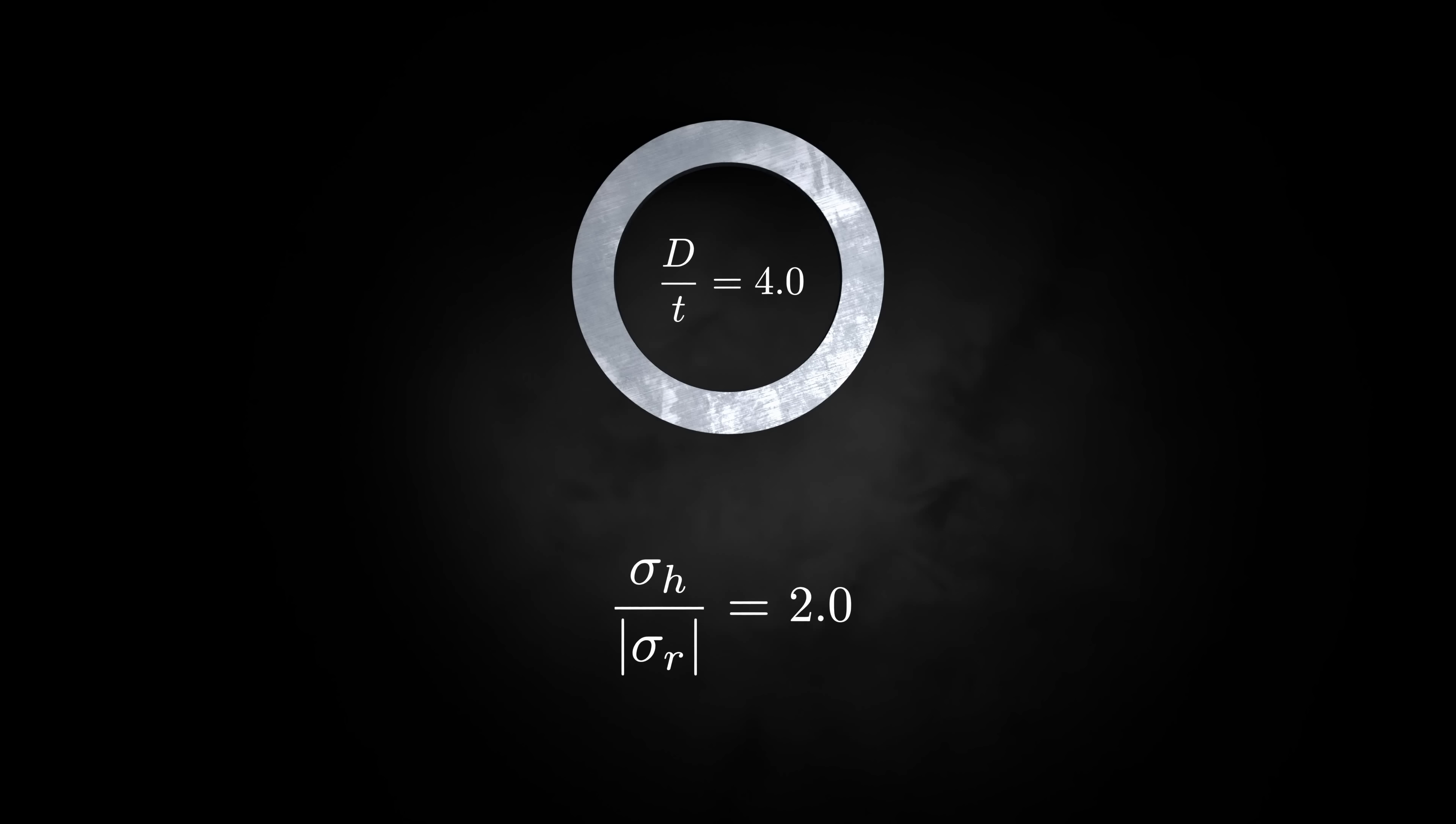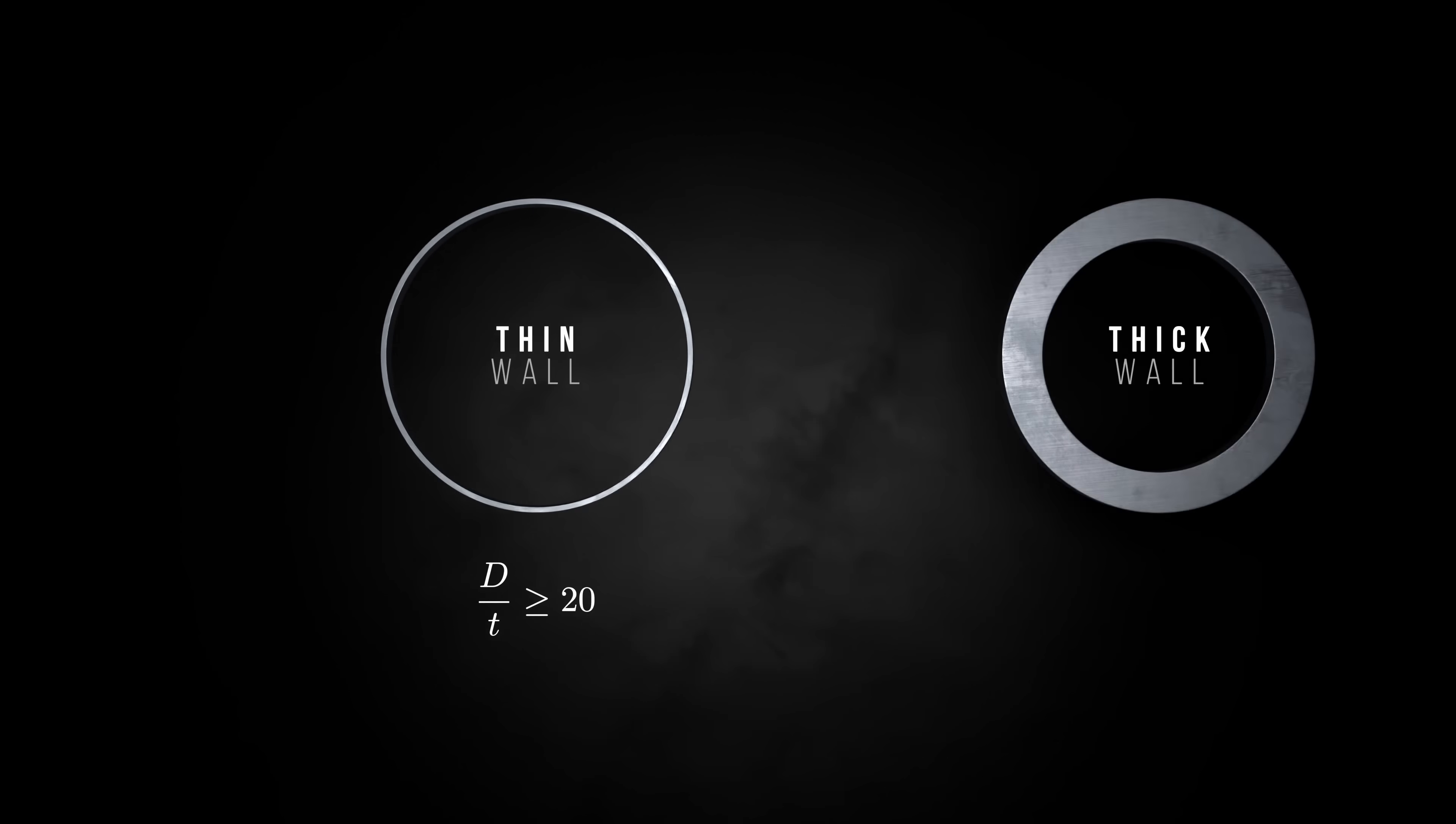It's common to define thin-walled pressure vessels as those with a wall thickness that's less than 5% of the diameter of the vessel. D over T is greater than 20, and a thick-walled pressure vessel for anything thicker than that.